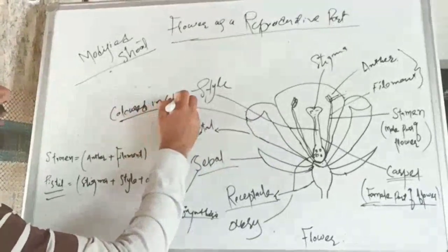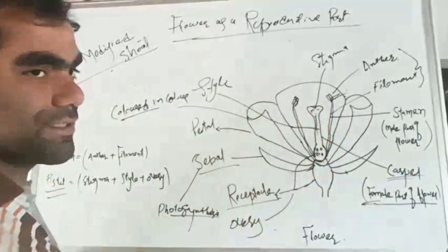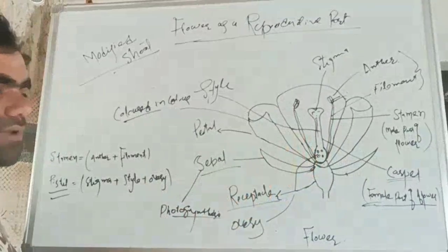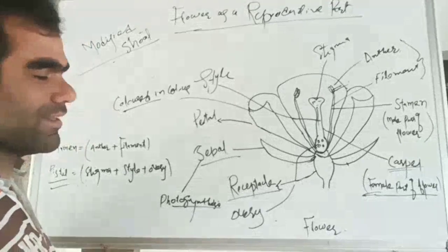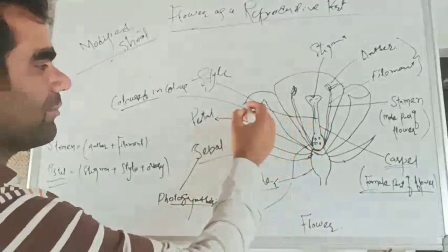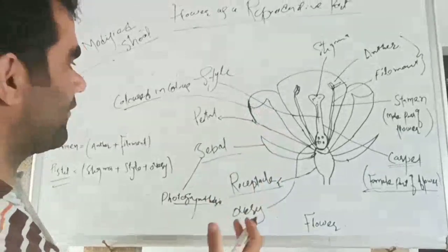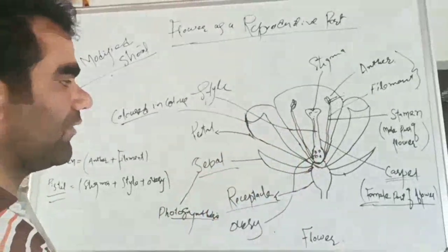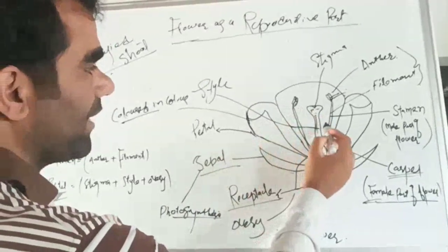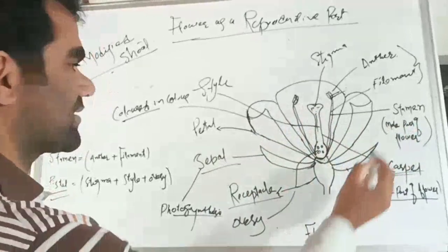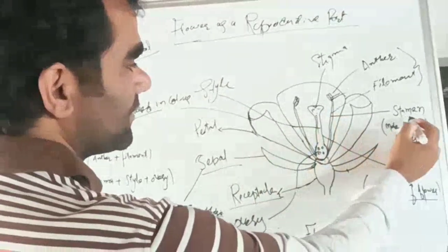After that there is a petal, which is usually colored. Why colored? Because they attract insects for pollination. Pollination in flowers is done by many methods — one method involves insects, which also play a role in the pollination of the flower.